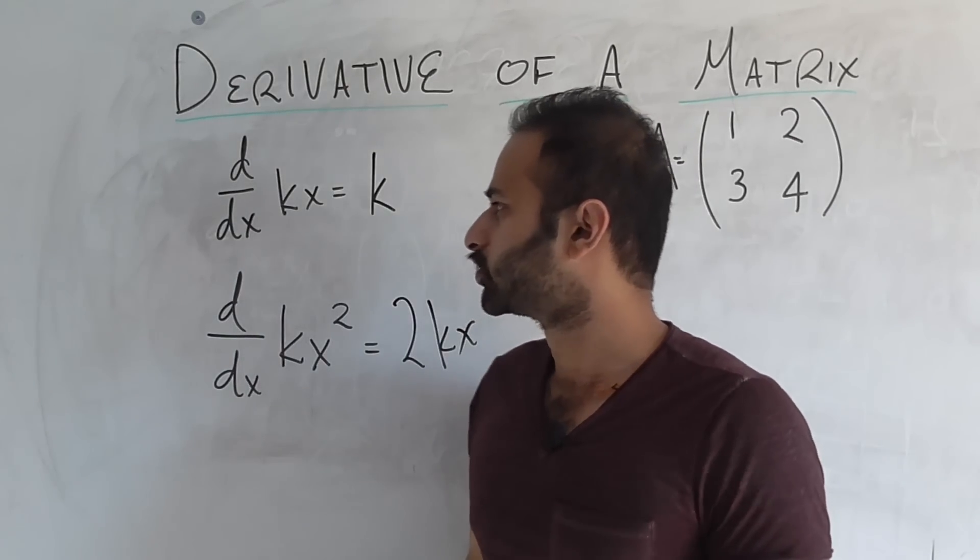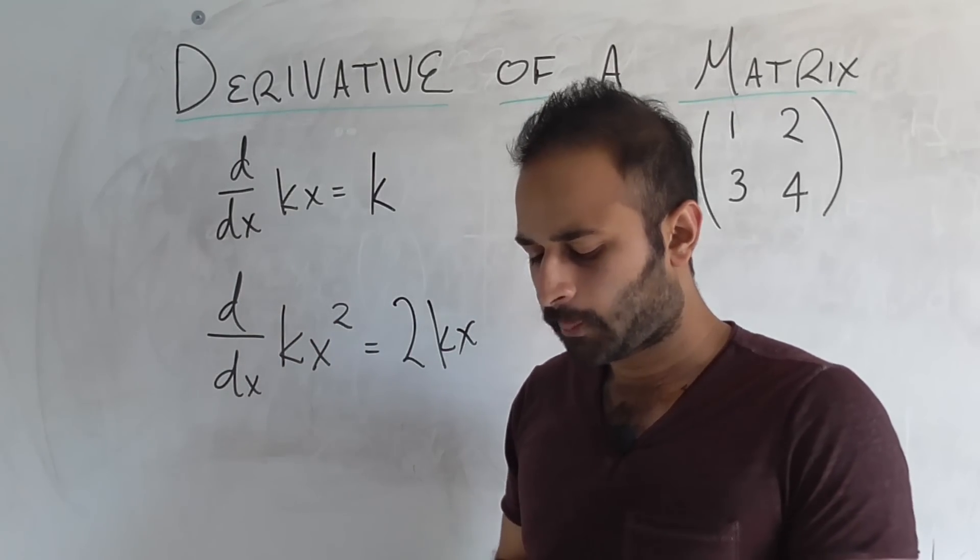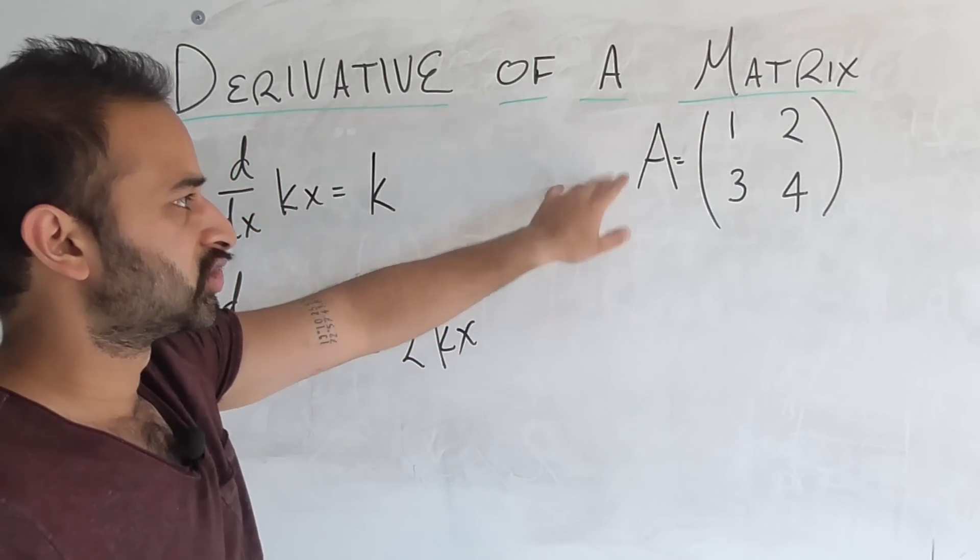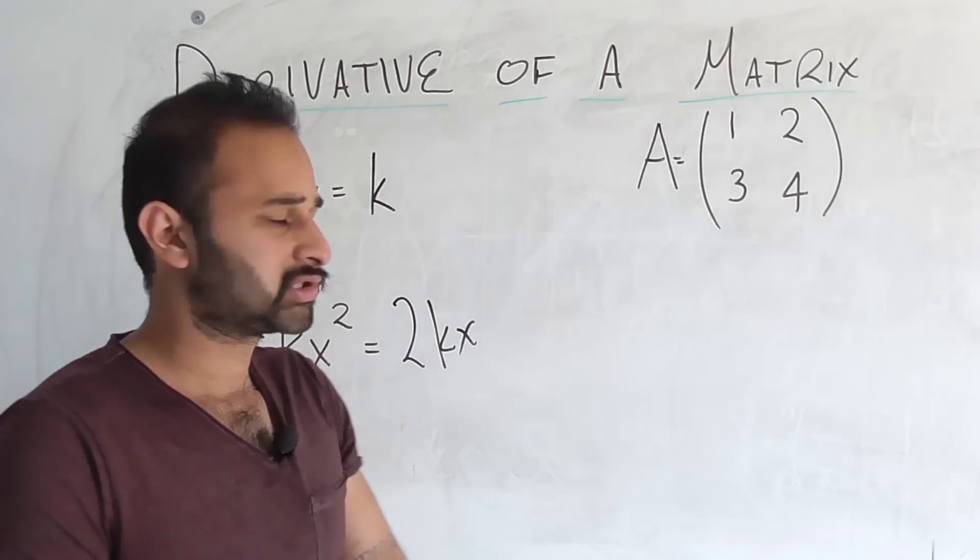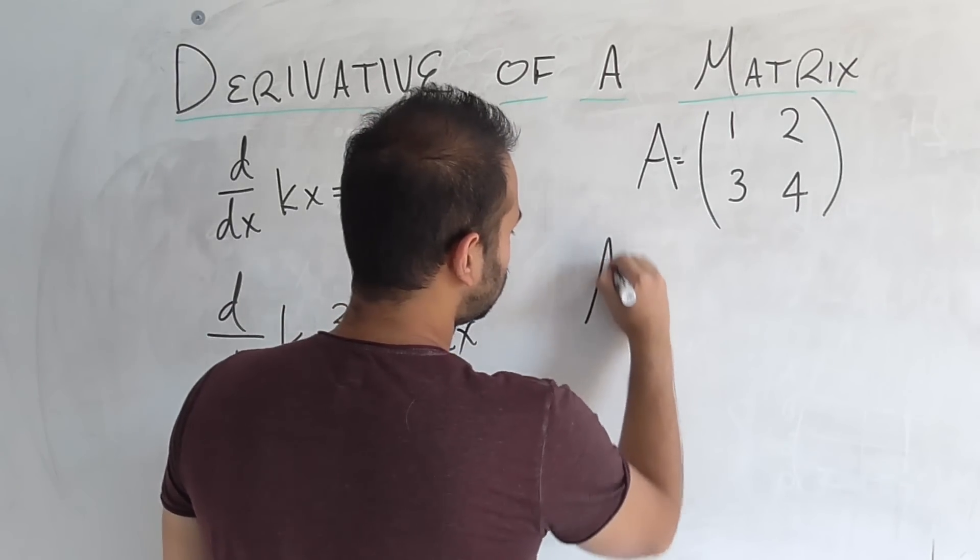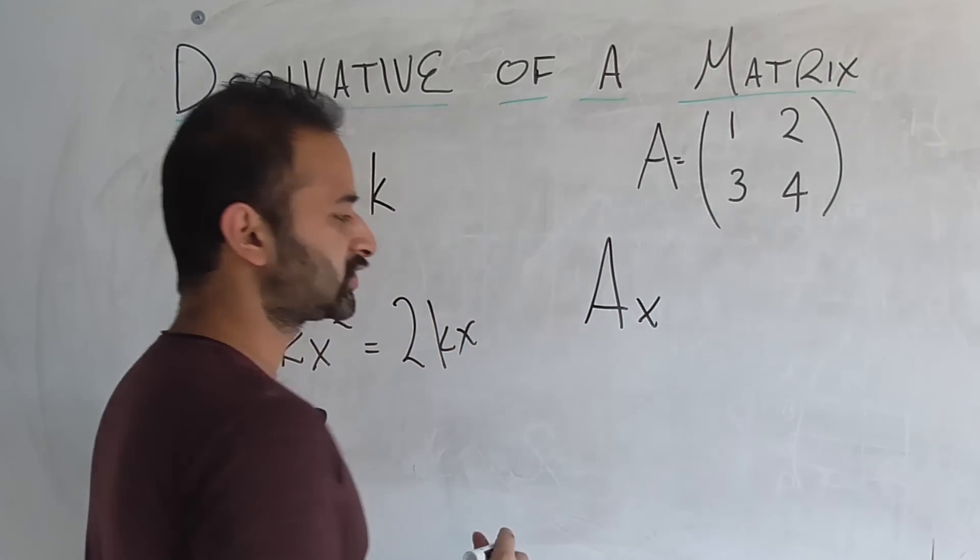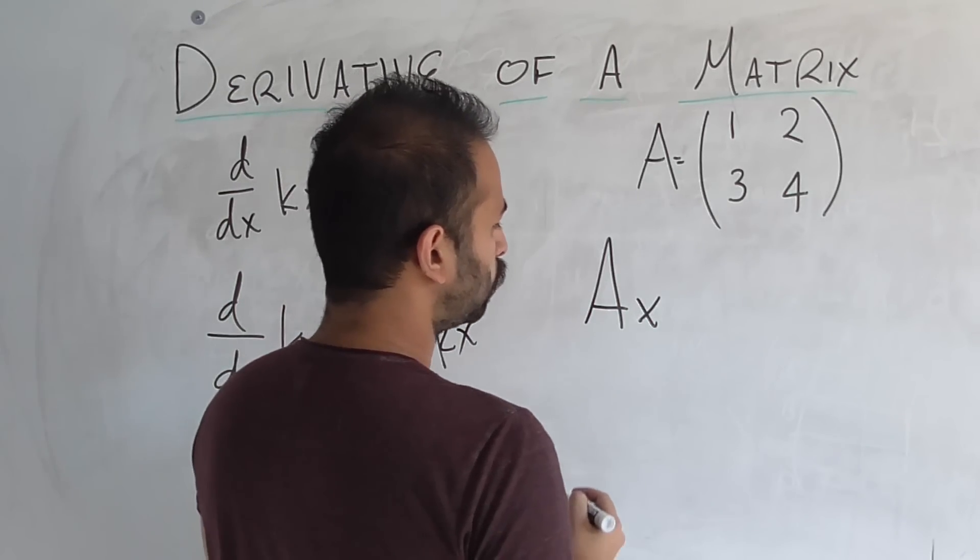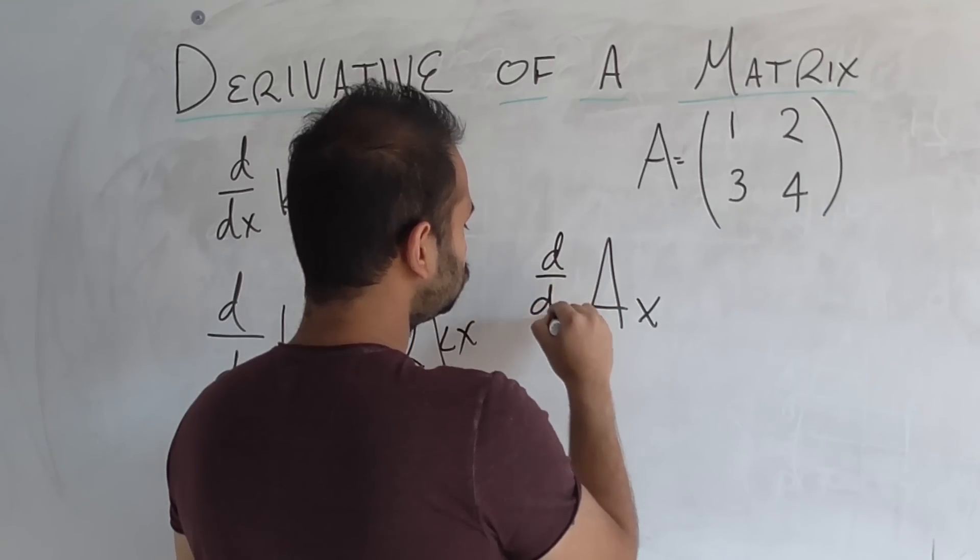These problems aren't very hard, because we're just taking the derivative of a function. Well, let's jump over here and look at this matrix A, which is just 1, 2, 3, 4, the 2 by 2 matrix. Now let's think about the operation A times x, where x is, of course, a 2 by 1 vector for this all to work out. So what is the derivative of this?